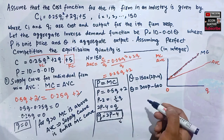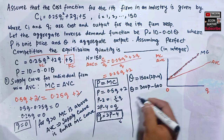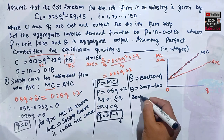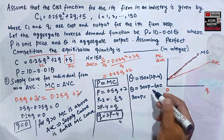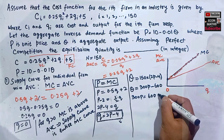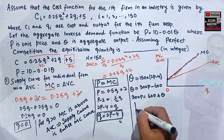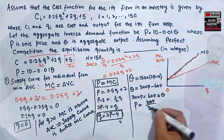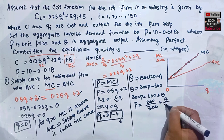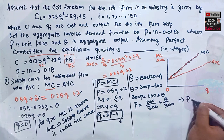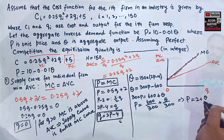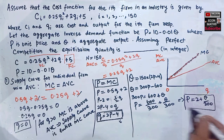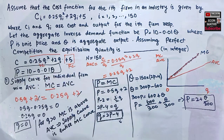Solving the market supply curve for P: 300P = Q + 600, so P = 2 + Q/300. This is our market supply curve. We also have the market demand curve P = 10 − 0.01Q. Equilibrium quantity is found by equating these two.